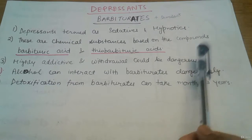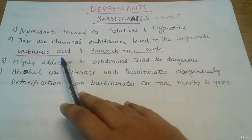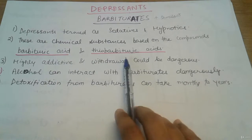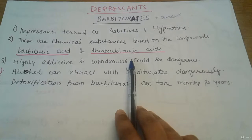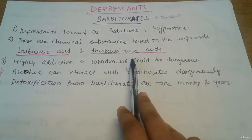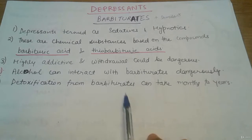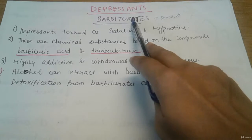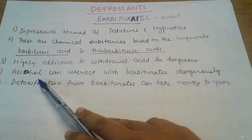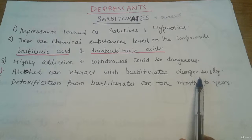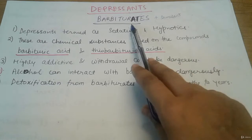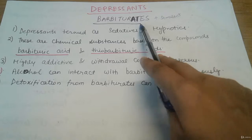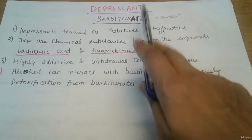To summarize key points: the compounds present in barbiturates are barbituric acid and thiobarbituric acid. The substance that most dangerously interacts with barbiturates is alcohol. The stimulant usually taken along with barbiturates to increase their effect is amphetamine.